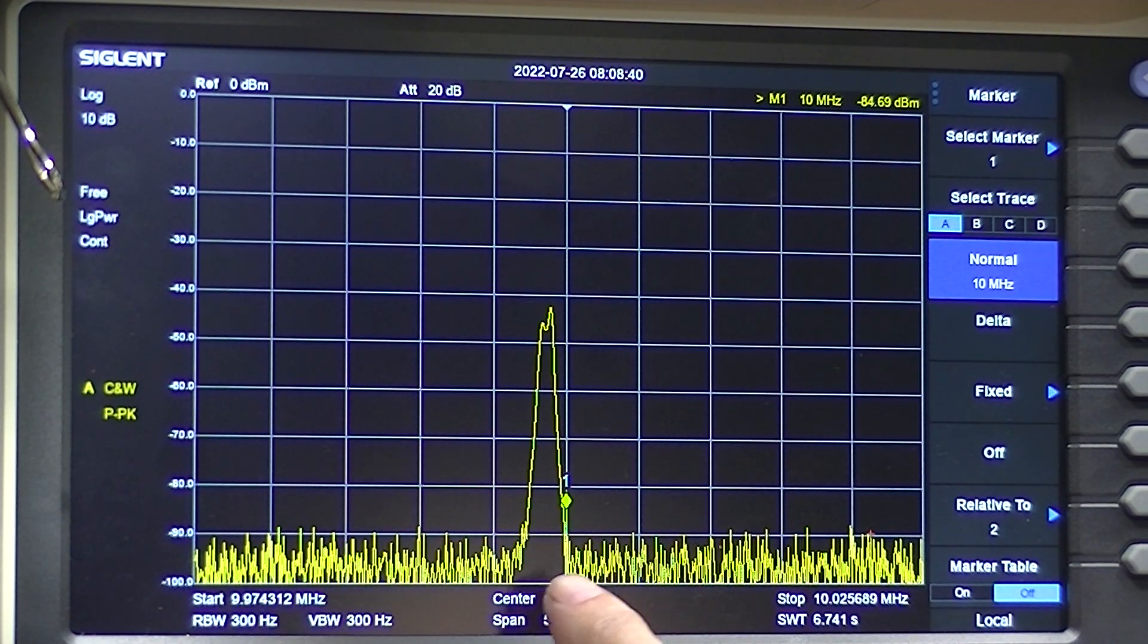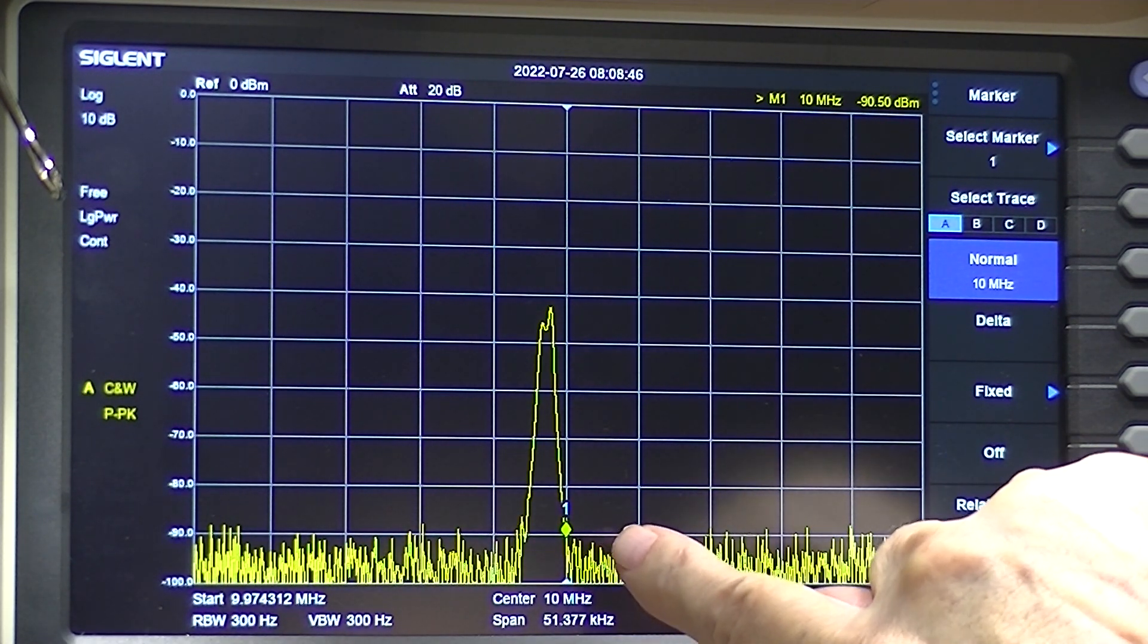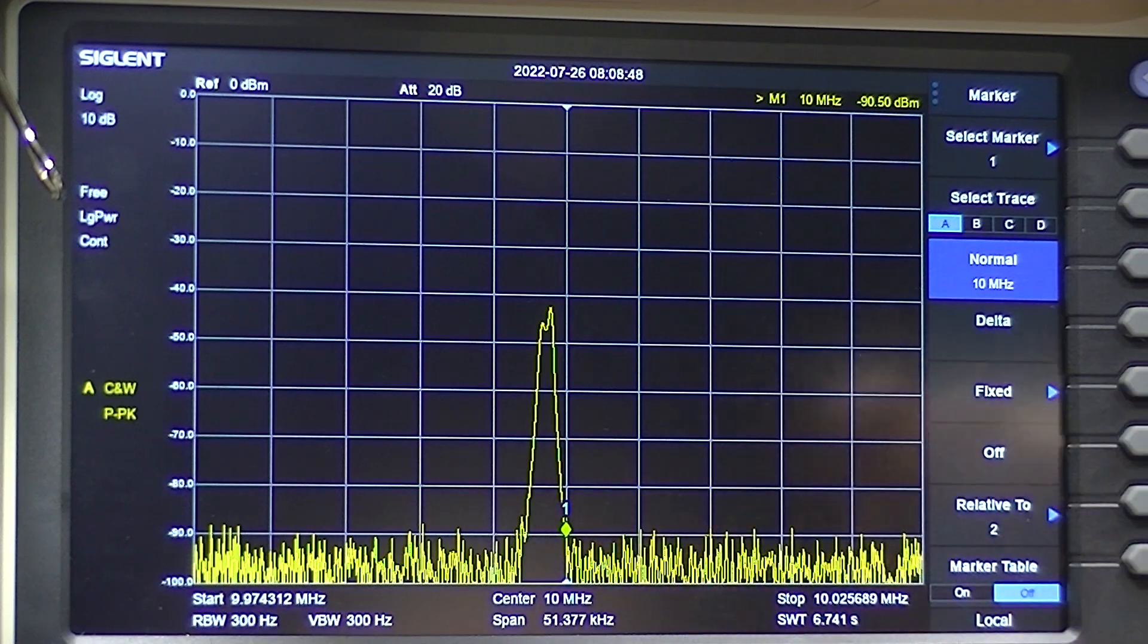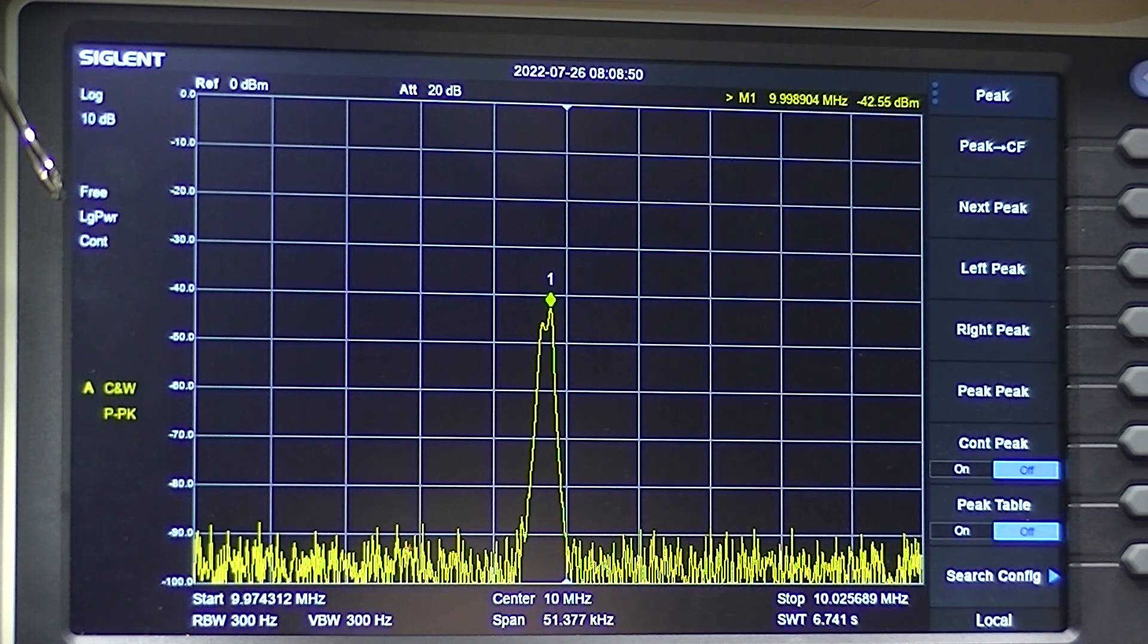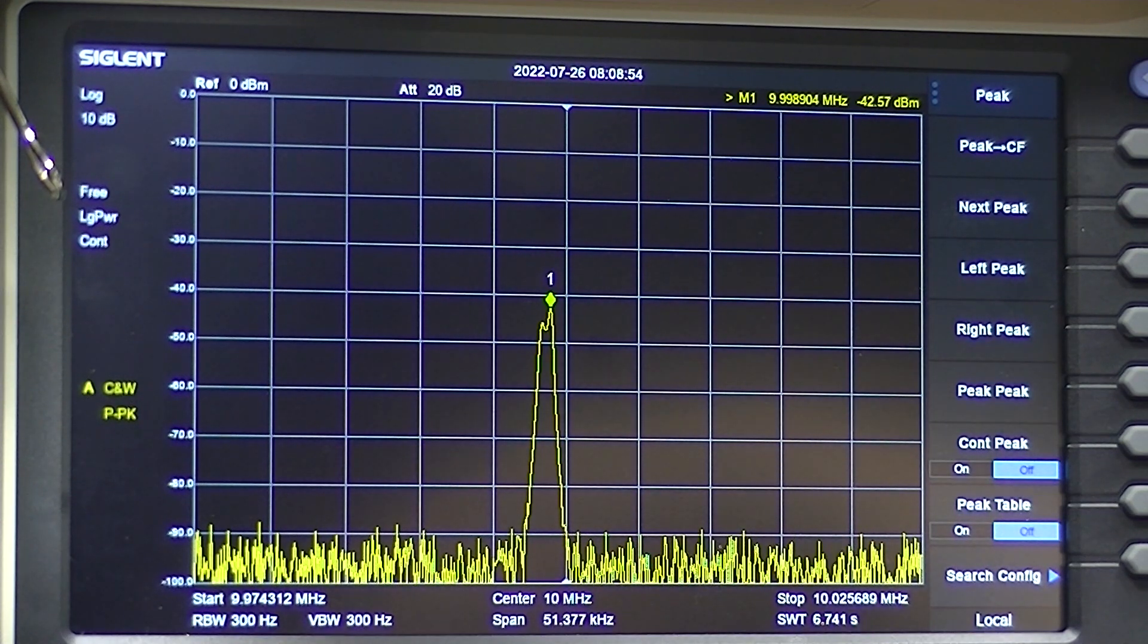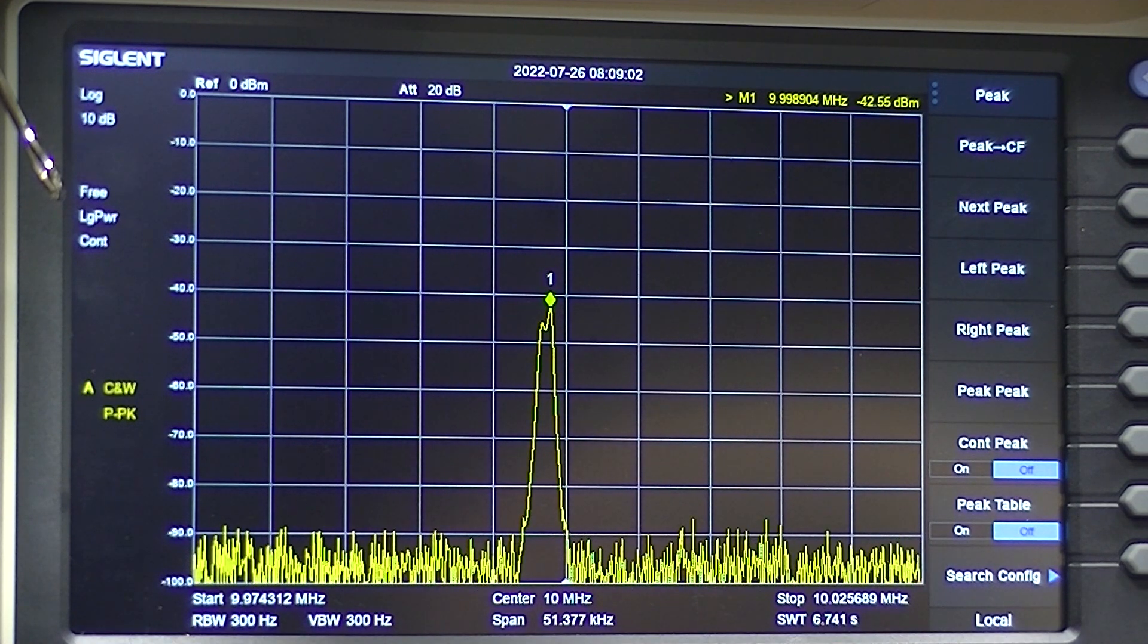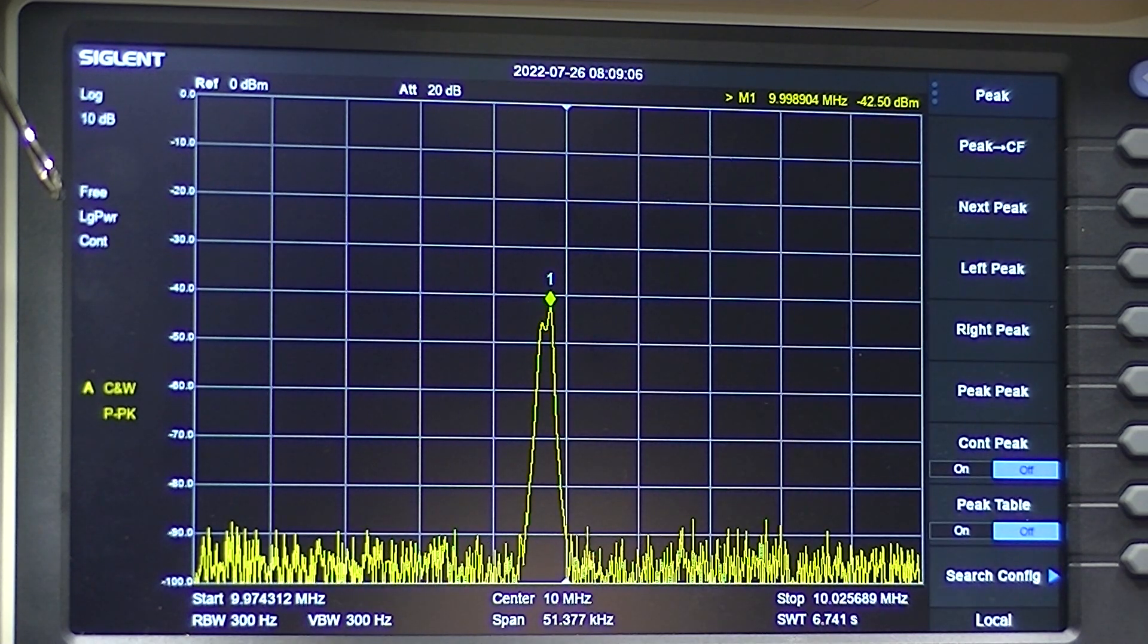This is the 10 megahertz ITT crystals, and you see 10 megahertz is here, so we're still outside the band pass. Let's look at the peak, which is 9.998904 megahertz. Close, but no cigar.